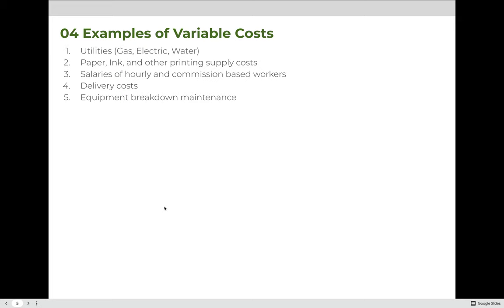Examples of variable costs include utilities like gas, electric, and water, as well as paper, ink, and other printing supply costs. The salaries of hourly and commission-based workers — especially hourly workers who don't work a consistent number of hours — are also variable. Delivery costs incurred throughout the year, and the cost to fix or replace equipment when it breaks down, are variable as well. You can't know for sure something will break, but you know you'll have to fix it if it does.